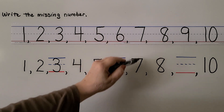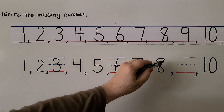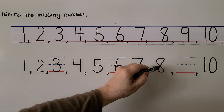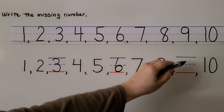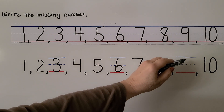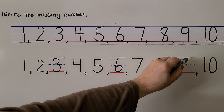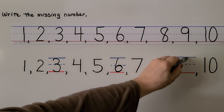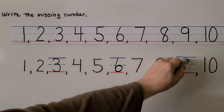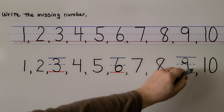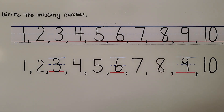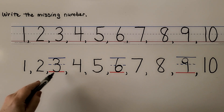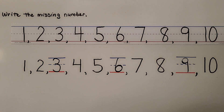Then I see 7, 8 — this must be 9. We can write the 9, and then we have 10. We filled in the missing numbers.